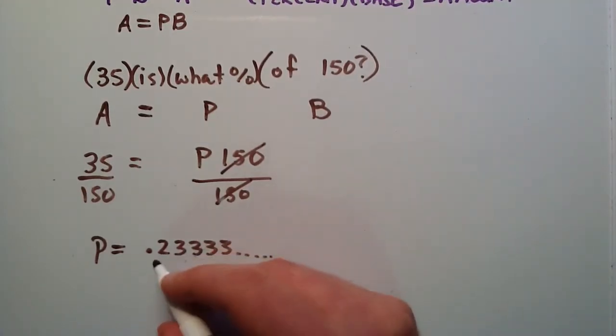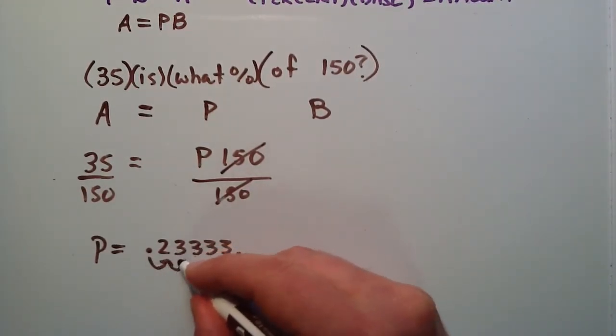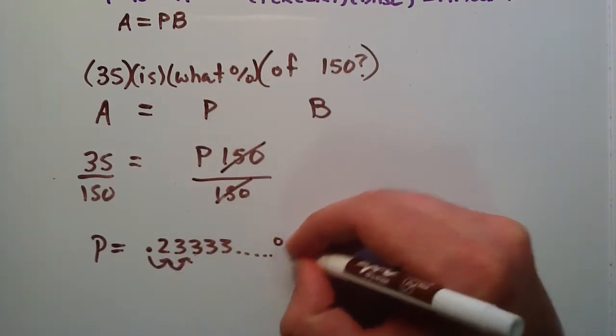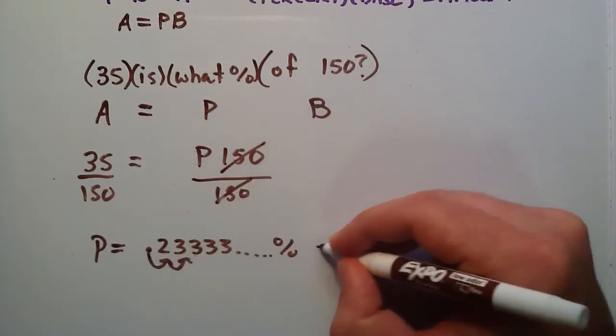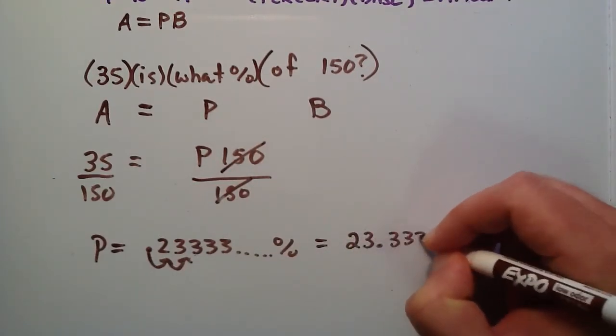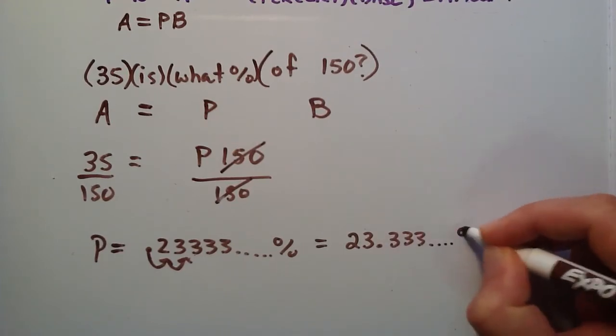If we shift this over 2 units to the right, shifting our decimal 2 units to the right, and then add a percent sign here, that gives us 23.333, a whole bunch of 3's, percent.